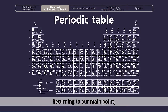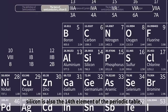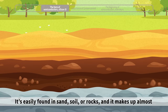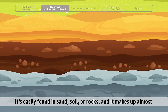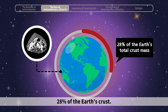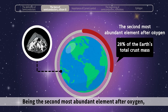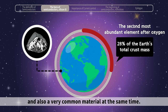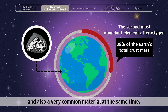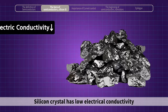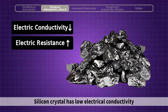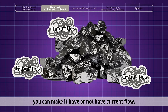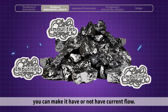Returning to our main point, silicon is also the 14th element of the periodic table, just below carbon. It's easily found in sand, soil, or rocks, and it makes up almost 28% of the Earth's crust. Being the second most abundant element after oxygen, it is a special material and also a very common material at the same time. Silicon crystal has low electrical conductivity and high resistance. Therefore, by adding impurities into it, you can make it have or not have current flow.